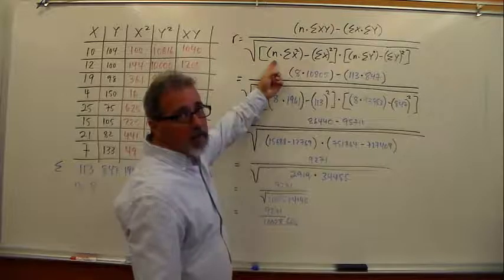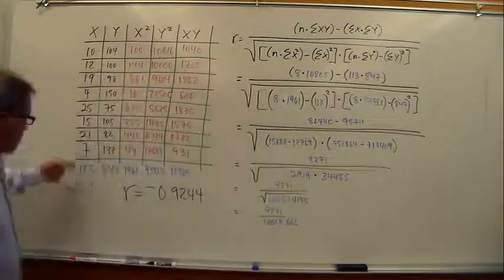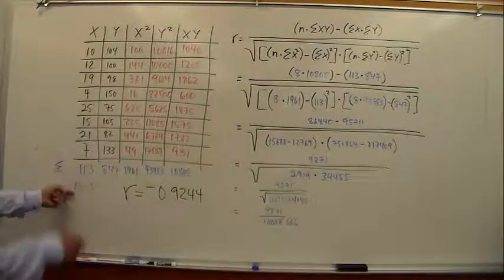N is the number of pairs. Number of pairs, we count them, we have eight. So you put eight in whenever there's an N.